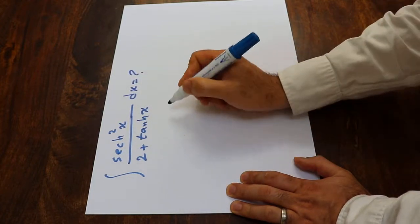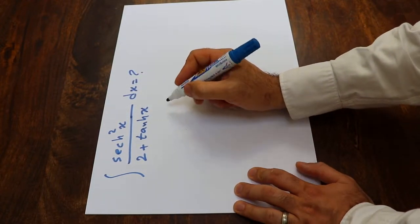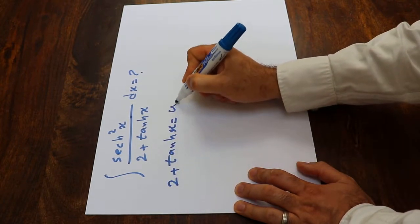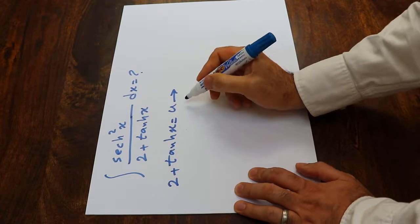You can solve this integral using the substitution rule. If you define 2 plus hyperbolic tangent x as u and take the derivative from each side of the equation,